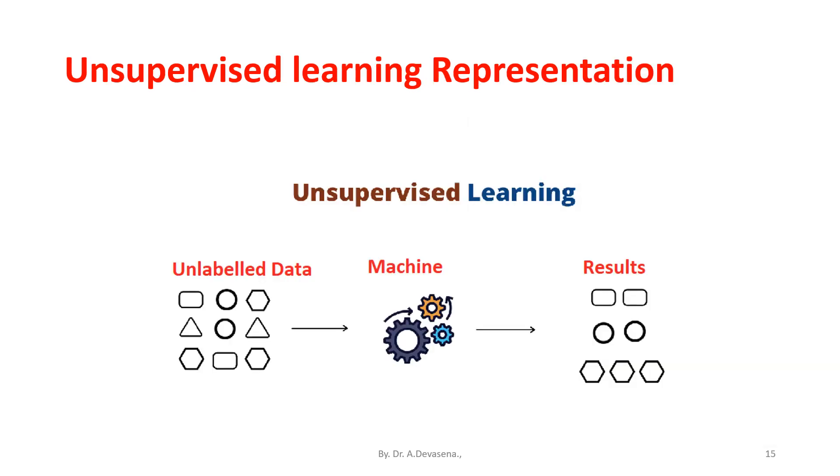Unsupervised learning representation: unlabeled data is given to the machine. Under unsupervised learning, the results available from the machine are as indicated here. The rectangles are segregated, circles are segregated, and the hexagons are segregated as the output.